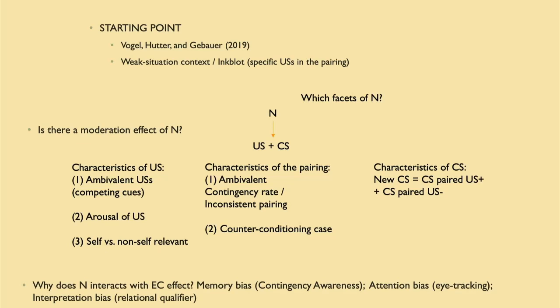The second main question is: once we show in which situation neuroticism moderates evaluative conditioning, why do we find this moderation? This is more like a cognitive style of studies — looking, for instance, at whether contingency awareness has to do with this. Maybe people recall more negative pairings than positive pairings. Or attention bias — maybe we use eye tracking to see if they focus more on the negative features of the stimulus, particularly if it's an ambiguous US. So interpretation bias, we can look at the relational qualifier. I think it's very important, this relational qualifier.